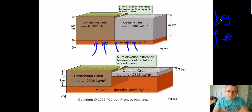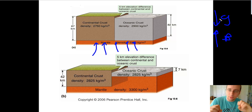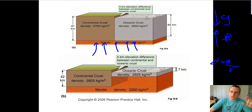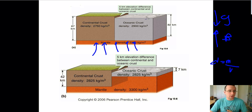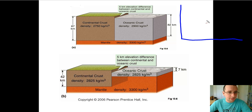Looking at density, if you get a block of continental crust and a block of oceanic crust that have about the same mass — in other words they weigh about the same — you would expect the object that is denser to actually occupy less space. Density is mass divided by volume, so if the mass is the same and the density is different, the volume must be different. That's what you see in the picture here: the oceanic crust must be thinner than the continental crust because it's denser, which is one plausible explanation.